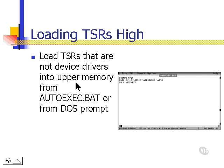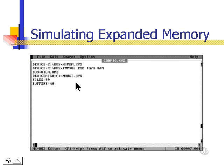We can also use the config.sys file to simulate expanded memory. In this case, we would start off with the same first line 'device=c:\dos\highmem.sys', but the next line would be 'device=c:\dos\emm386.exe' followed by a space, then the amount of expanded memory we want to free up, then a space, then the word RAM — R-A-M. This will simulate, in this case, 1024K of RAM — in other words, 1 megabyte of RAM.